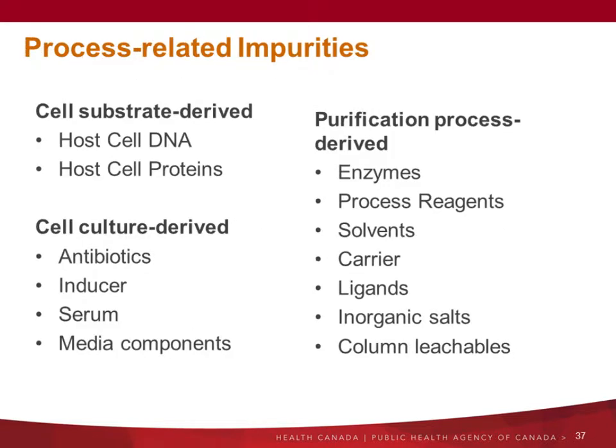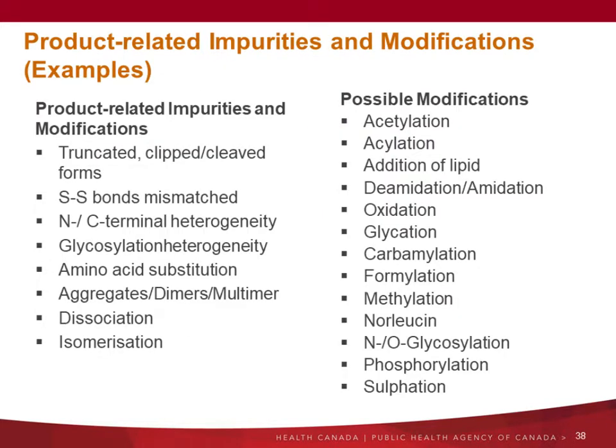Here is a list of process-related impurities, and examples of what is considered product-related impurities and modifications. In terms of product-related impurities, you may have truncated or clipped forms, aggregates, dimers, multimers, dissociation, or isomerization. In terms of modifications, you may have acetylation, oxidation, and glycation. You need to monitor all of that when you do your characterization studies, and also evaluate the activities of those variants.